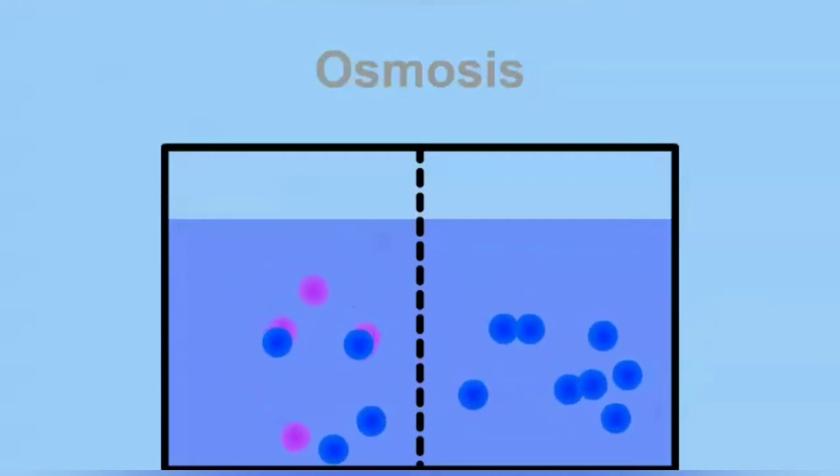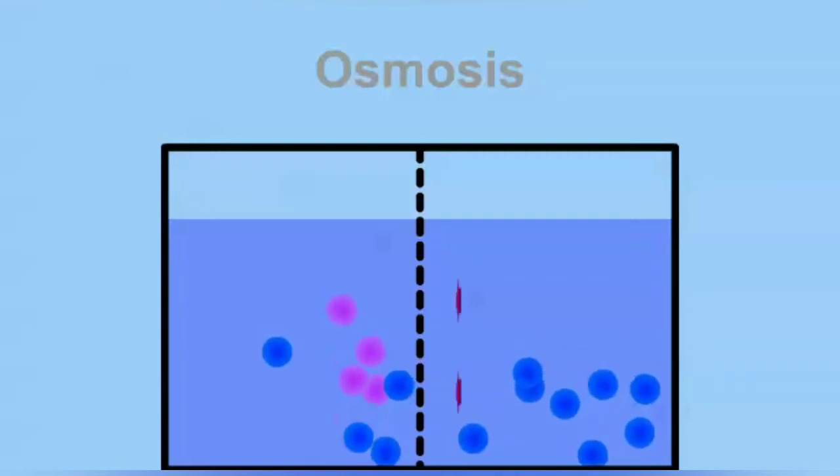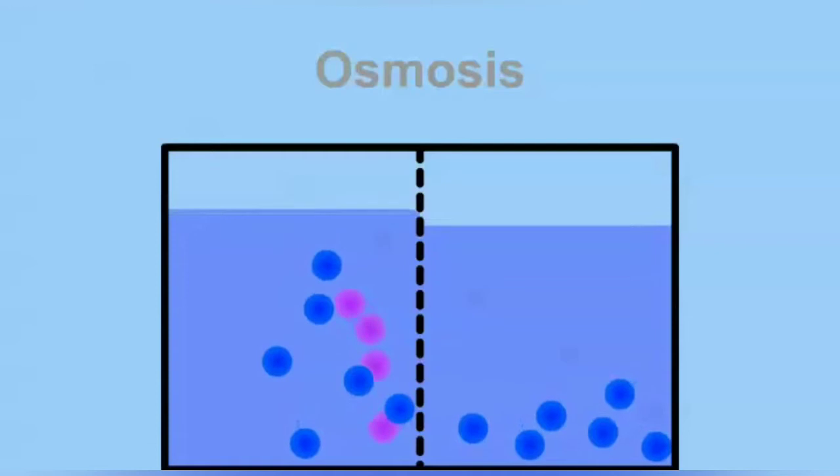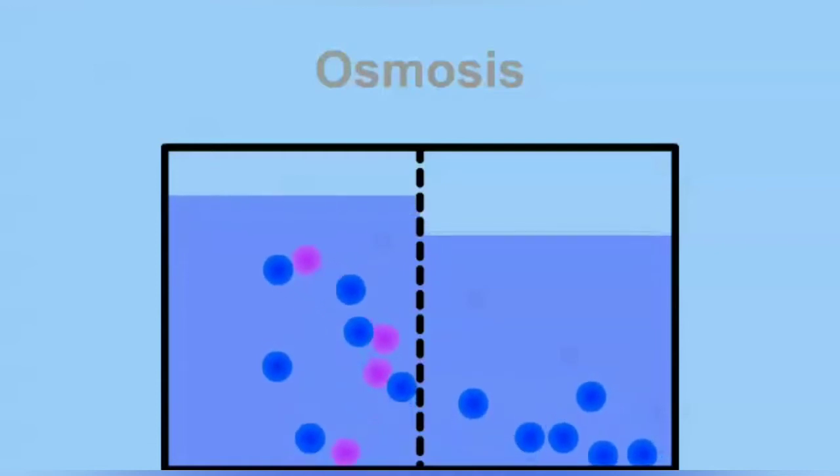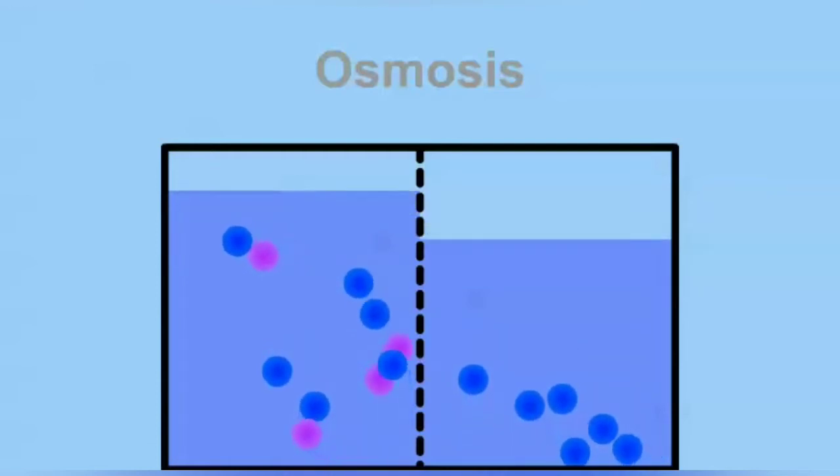which is the passive movement of water from an area high in water concentration through a semi-permeable membrane to an area low in water concentration. This movement achieves an equal amount of water in each area.